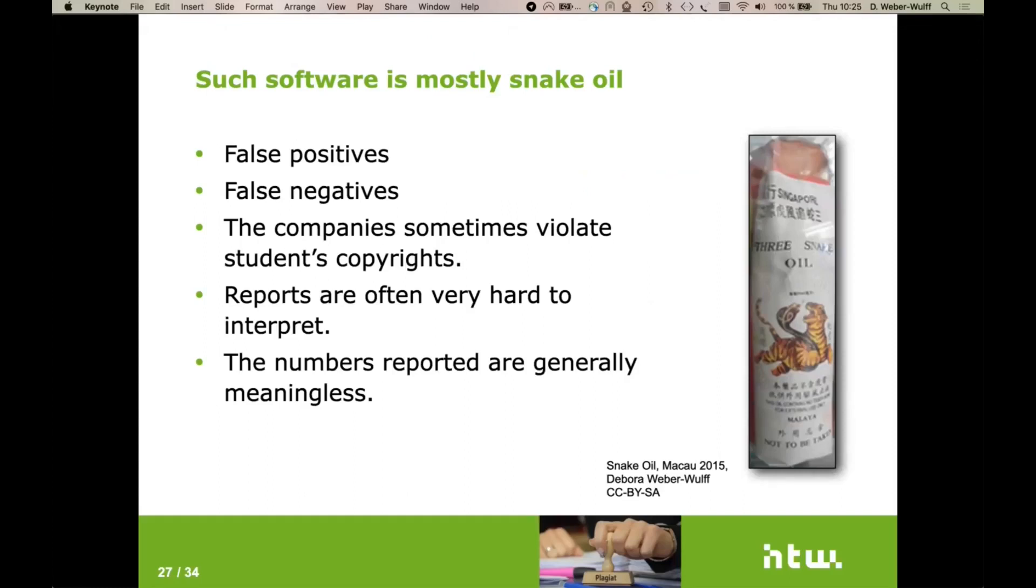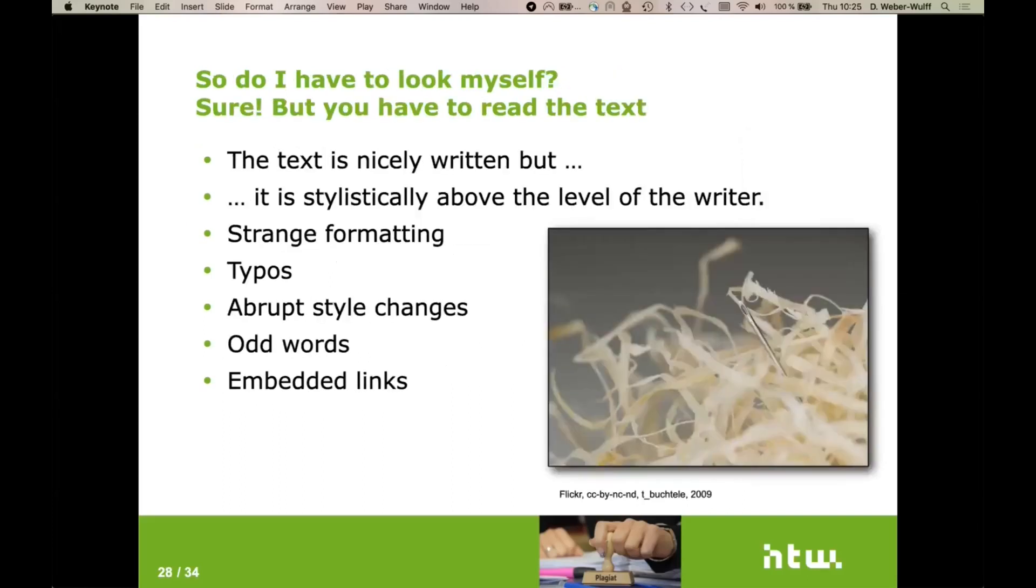Many companies violate the students' copyrights, especially within the EU, which is the only copyright law that we were applying here. The reports are horrible. They're really hard to interpret and to interpret correctly, which is why people focus on the number. It turns out the numbers reported are generally meaningless. Sometimes they even change. Ten minutes later, when you do a new test of the same software, you get a different result because they're using random selections of the text to look at.